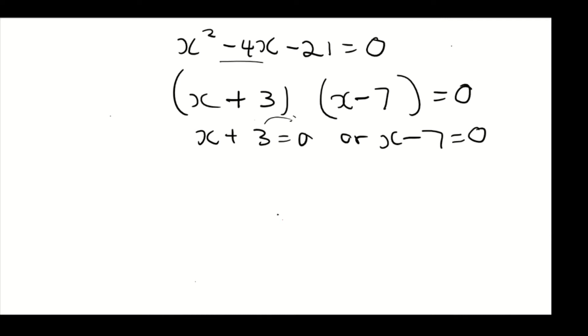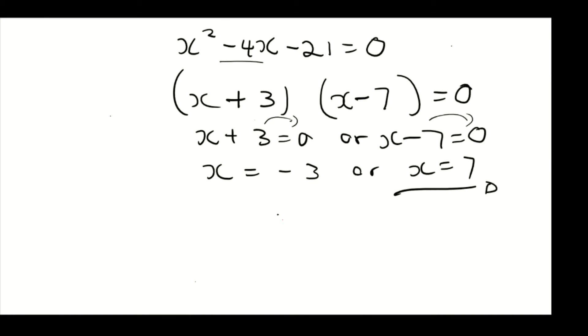We transpose the 3 to the other side, and the minus 7 to the other side. So x is equal to minus 3, or x is equal to 7. These are your solutions of x.